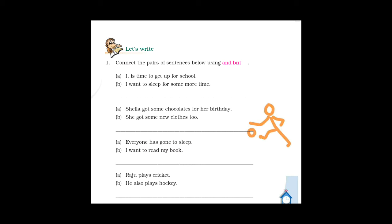Now second pair. Sila got some chocolates for her birthday. Sentence B: she got some new clothes too. How to connect these sentences? With 'and'. Sila got some chocolates for her birthday and she got some new clothes too.